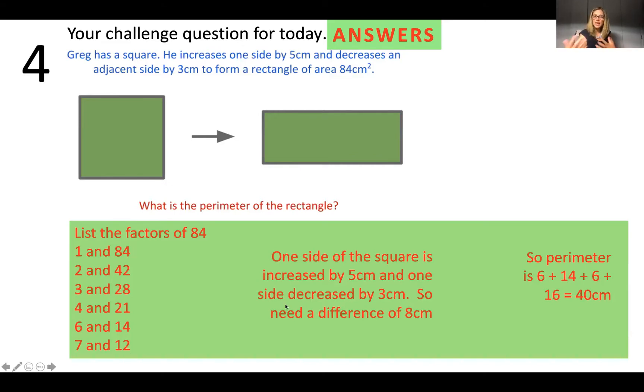So the difference between adding five and subtracting three is eight. So I want two factors of 84 that have a difference of eight. So I've listed them all out here. And I can see that six and 14 have a difference of eight. Brilliant. So now I know that my perimeter is six plus 14 plus six plus 14. I'm so sorry. There's a typo there. Six plus 14 plus six plus 14, which gives you 40 centimeters.